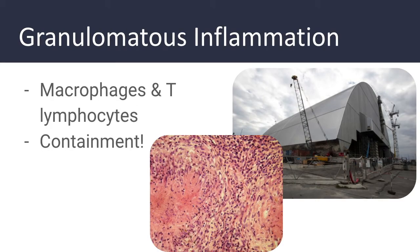Granulomatous inflammation is a form of chronic inflammation characterized by collections of activated macrophages, often with T lymphocytes, and sometimes associated with central necrosis. This is the body's attempt to contain an offending agent that is difficult to eradicate. There is often strong T cell activation leading to macrophage activation, which can cause injury to normal tissues. These activated macrophages can develop abundant cytoplasm and begin to resemble epithelial cells — when this occurs they are called epithelioid cells. Some macrophages may also fuse to become multinucleated giant cells.